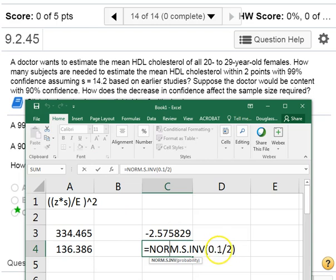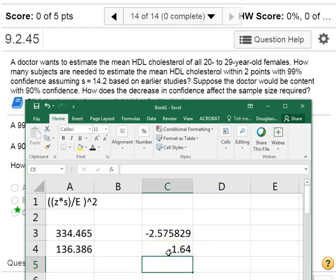We split that 10%, that 0.1, between the two tails of the distribution, and we get our critical Z value.